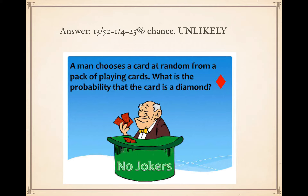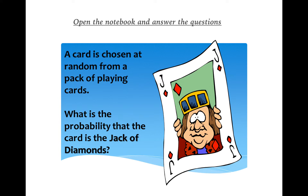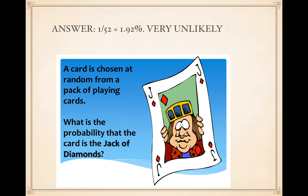Next question: what is the probability that the card chosen is the jack of diamonds? It's not just any diamond — it's specifically the jack of diamonds. The answer is one over 52 — approximately 1.92, or about two percent. It's quite unlikely you would get the jack of diamonds.